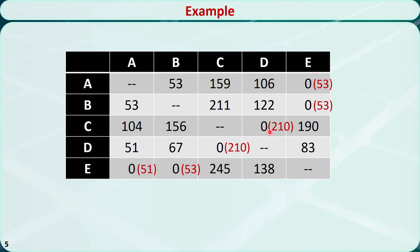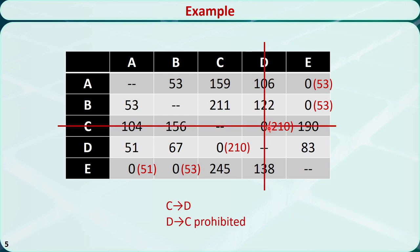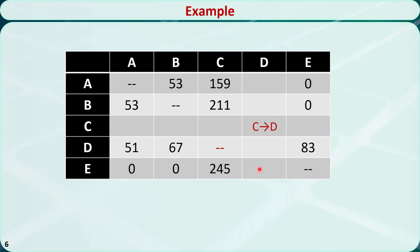So we need to include an arc from C to D in the tour. Then cross out this row and this column. Because we just traveled from C to D, the reverse arc D to C will not be allowed for further consideration, so we remove this element in the matrix. This is the remaining matrix. We still have some rows and columns left, so go back to step 1 and repeat the process.